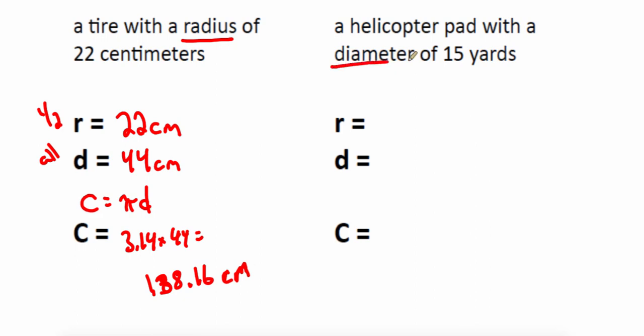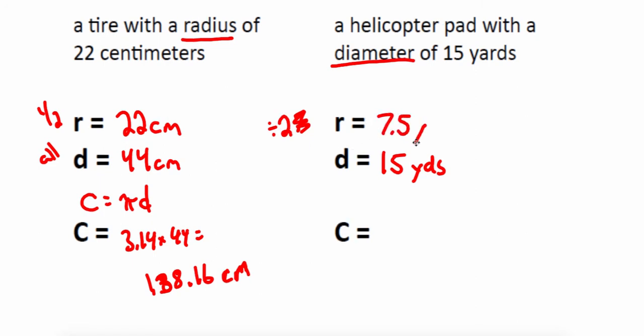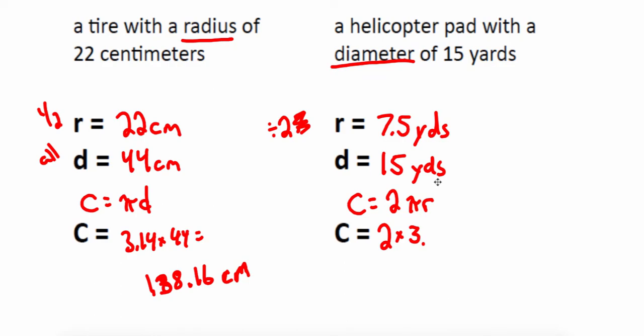Next one says a diameter of 15 yards. So the radius is 15 divided by 2, which is 7.5 yards. And then I do my circumference. Let's use the radius this time. 2 times pi times the radius. So I would do 2 times 3.14 times my radius of 7.5.